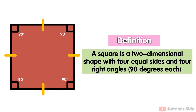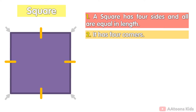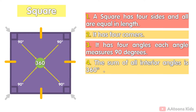All four angles are of equal measures. Properties of a square: a square has four sides and all are equal in length, it has four corners, and it has four angles where each angle measures 90 degrees. The sum of all interior angles is 360 degrees.